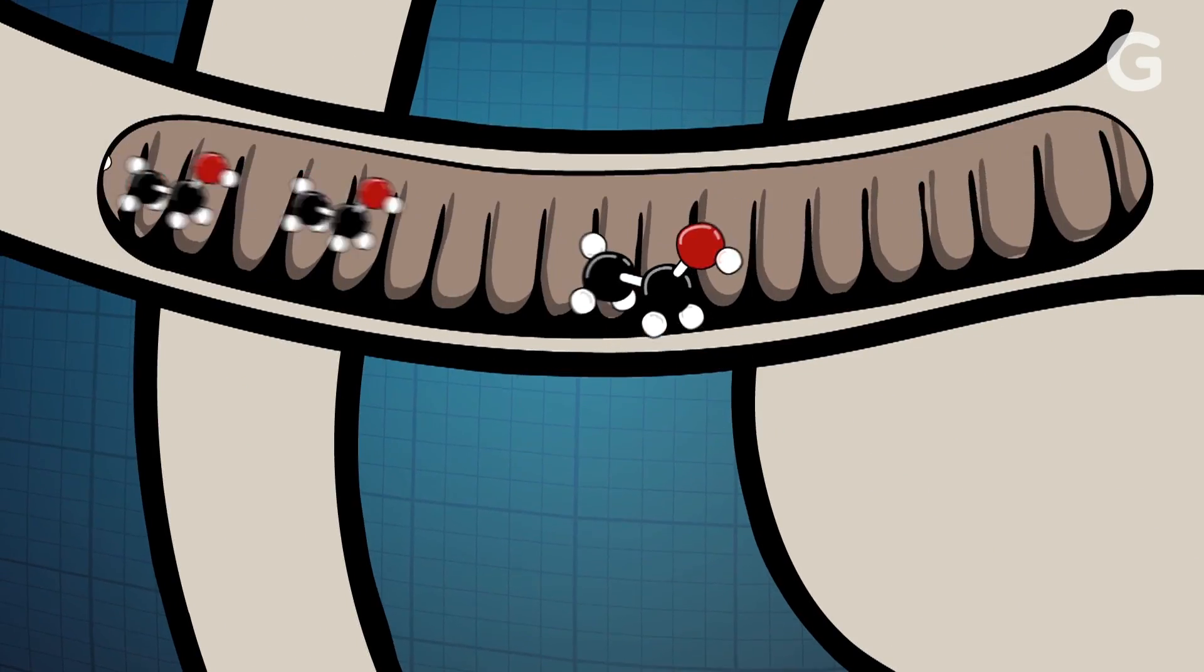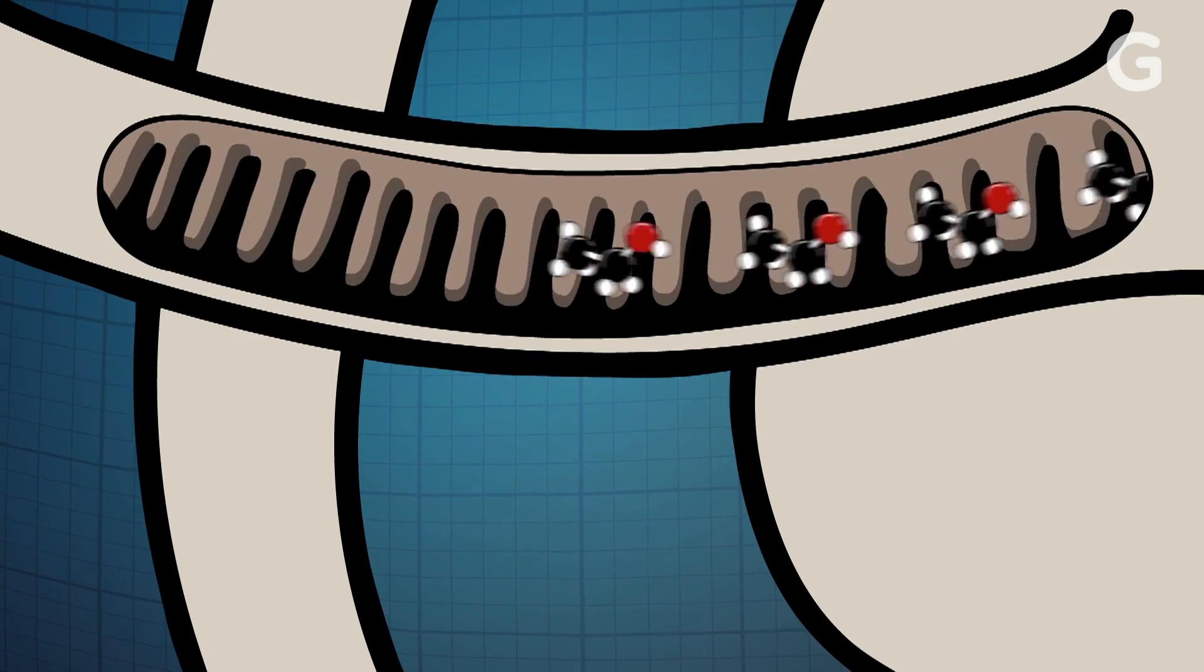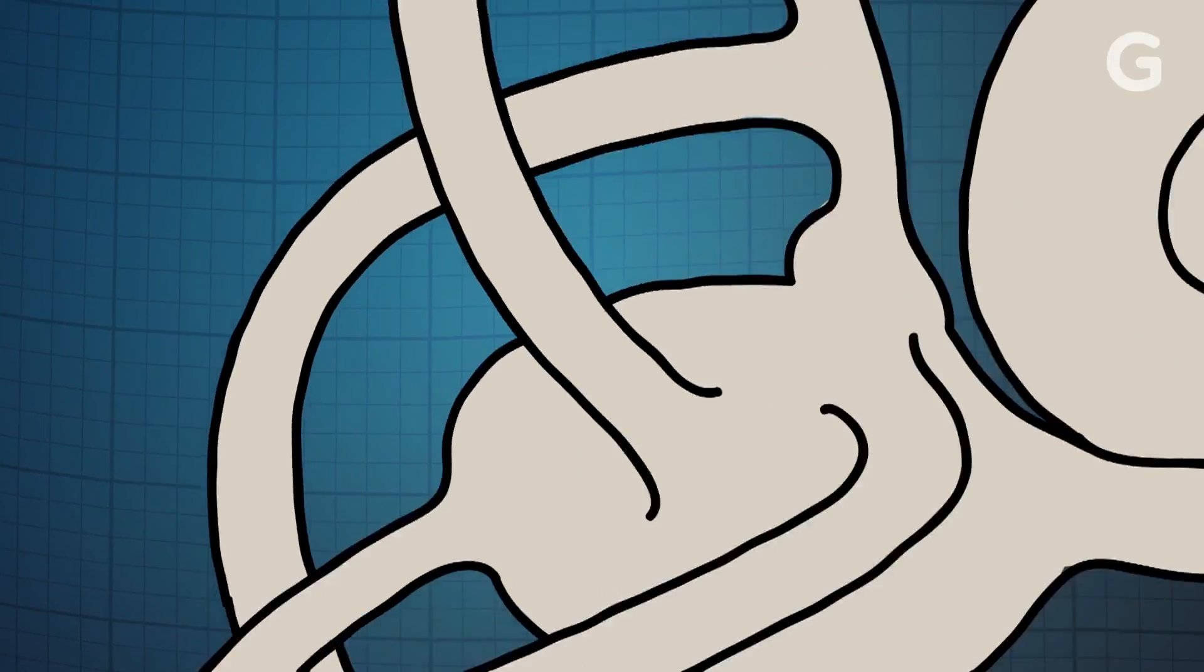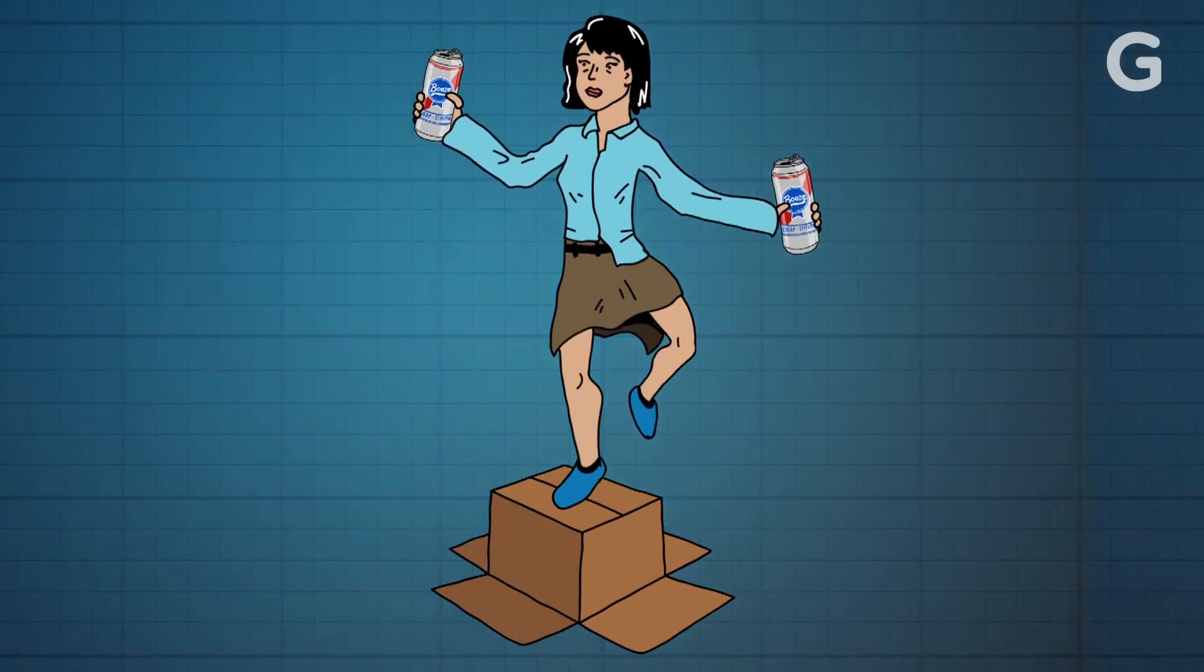The alcohol changes your blood's density, which deforms the inner ear and those canals. That changes the signals sent to your brain, and the room will start to spin.